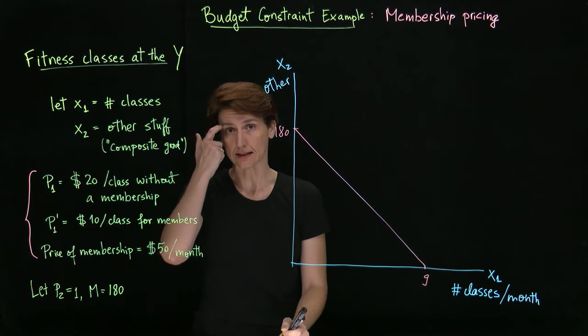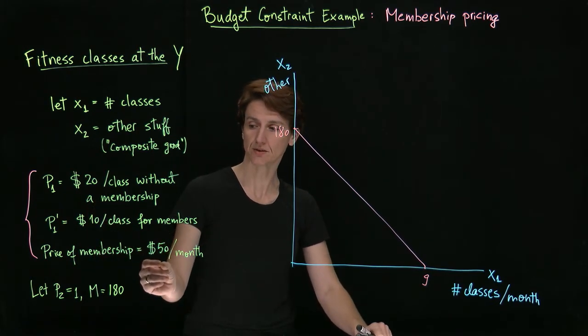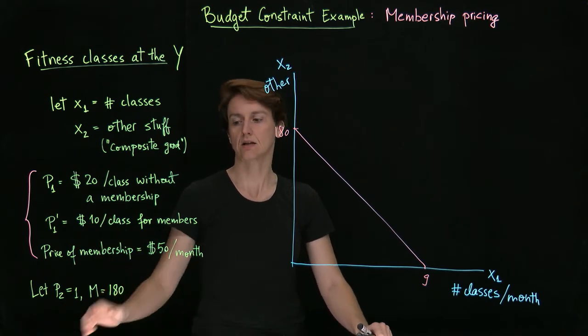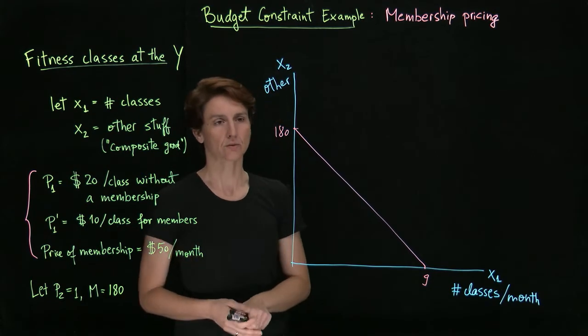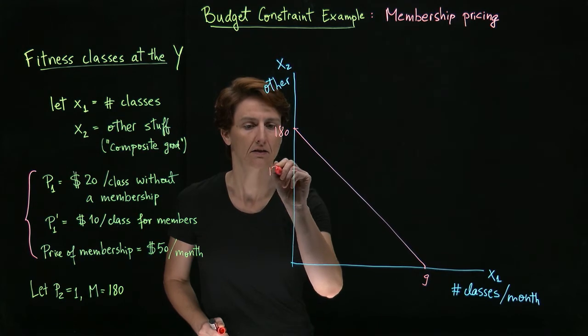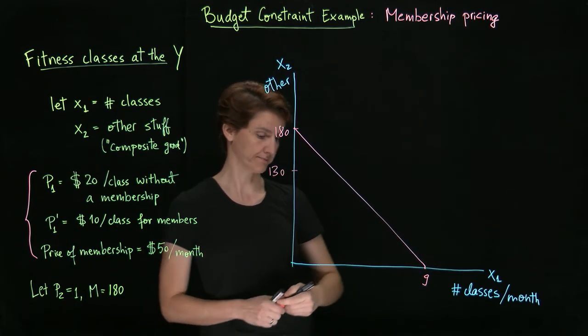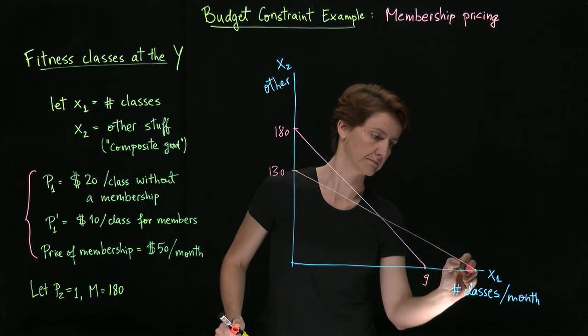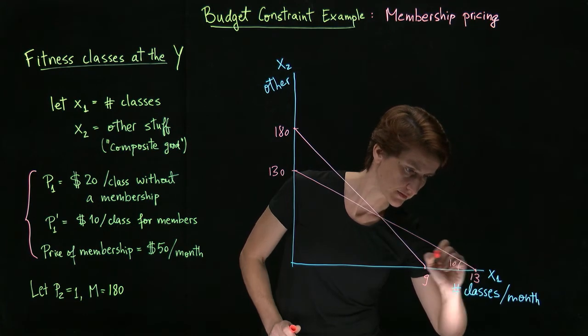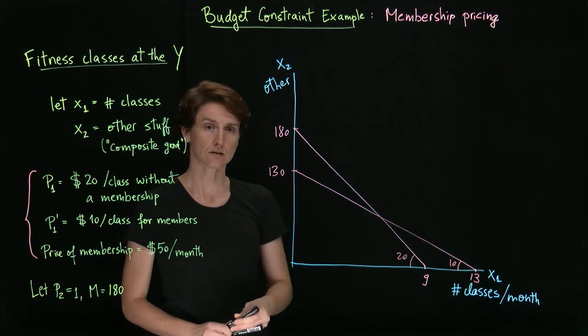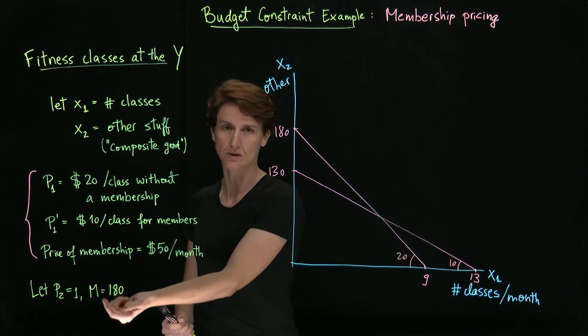What about if we had the membership? How many classes would we be able to buy at most? You might be tempted to say eighteen. However, note that if we get the membership, we have to take that out of the full budget first. So if we were to buy the membership and then consider, for example, not buying any classes, we would be able to get at most a hundred and thirty units of other things. If we spend that full money left over on classes, we would be able to buy thirteen of them. So now the slopes are ten and twenty, reflecting the two prices per class. But importantly, the budget constraint here intersects lower because now there's a fixed sum that we lose out of the budget every month.